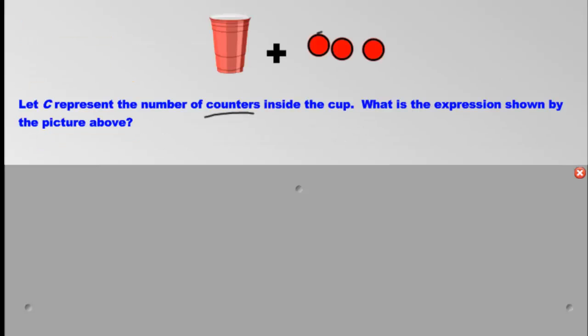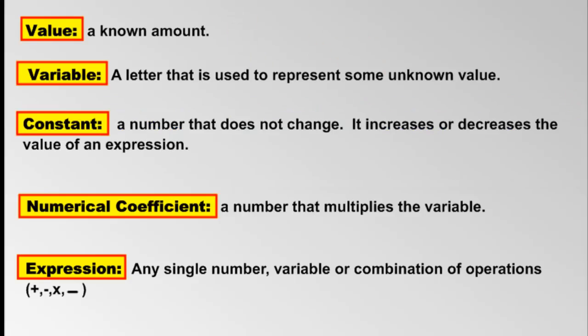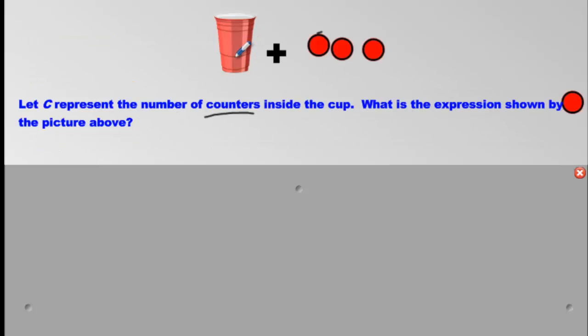We've got a cup and a plus sign and three round circles. We're calling these circles here counters, but you can call them anything you want. I'm going to call them marbles. Now, what's the point of this cup? This cup has some marbles inside. We got some marbles inside, some mystery amount in there. We have maybe one, maybe two, maybe five, who knows? I'm not letting you know how many we have.